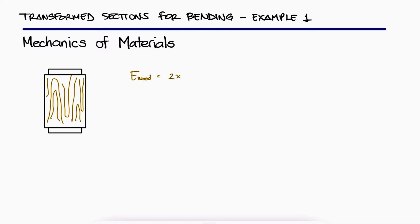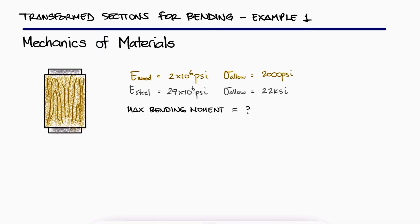Wooden beams and steel plates are securely bolted together to form the composite member shown. With the maximum allowable stress information, what is the largest permissible bending moment when the member is bent about a horizontal axis?